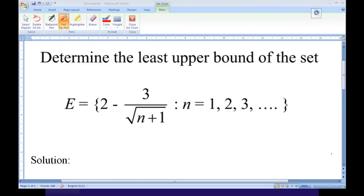Hi, for this recording, I'm going to show you how to determine the least upper bound of a set. This time, the set E is a set containing 2 minus 3 over square root of n plus 1, n equal to 1, 2, 3, 4, and so on.